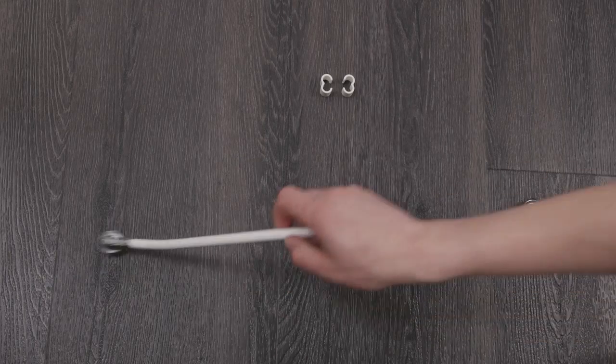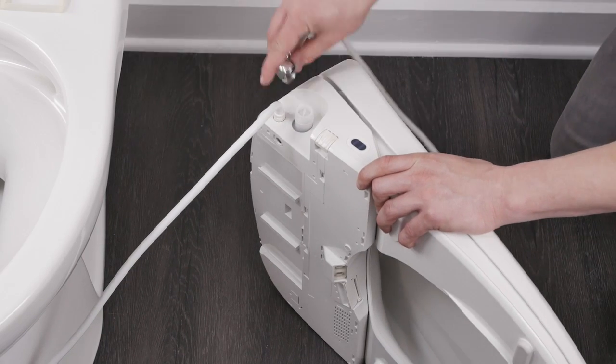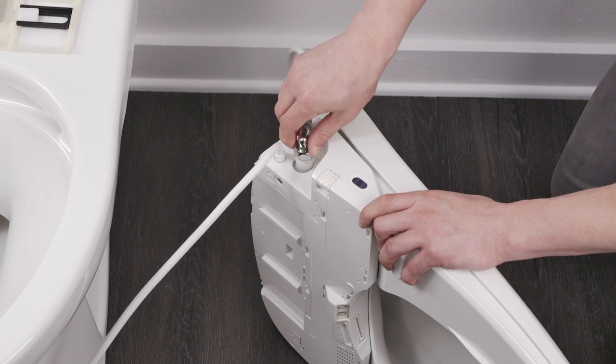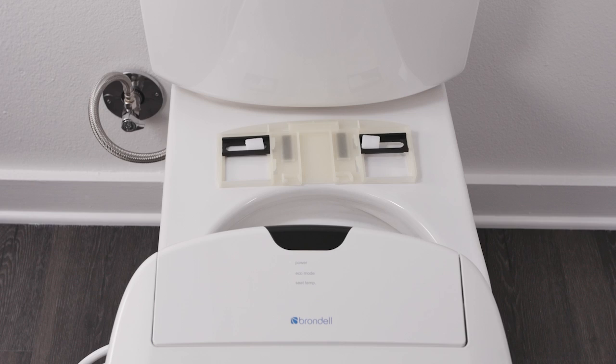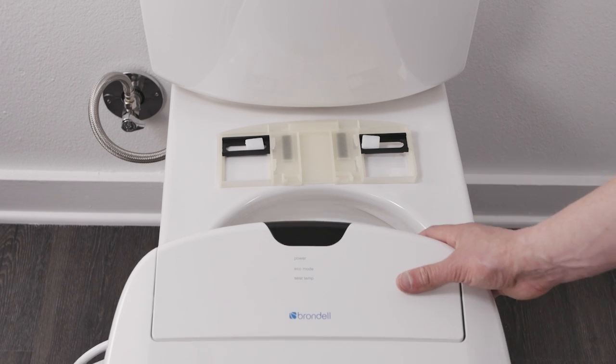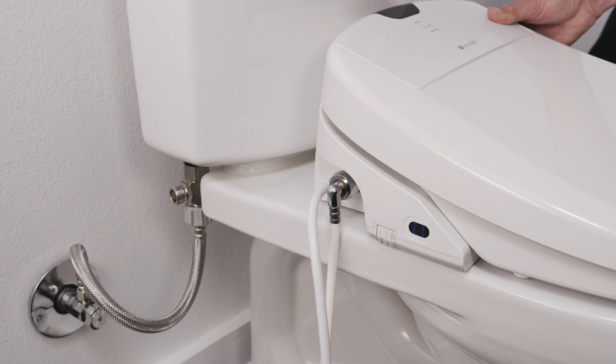Connect elbow side of the Bidet hose to the swash's water inlet. Place the swash flat onto the toilet in front of the mounting plate. Slide the swash toward the tank onto the mounting plate until you hear the mounting clips snap into place.